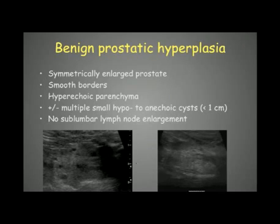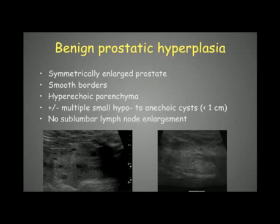When examining the prostate we also have to check the sublumbar lymph nodes, as this helps differentiate between different prostatic problems. In case of benign prostatic hyperplasia the lymph nodes should show no abnormality — they should not be enlarged or hypoechoic, and should appear normal or not visible.